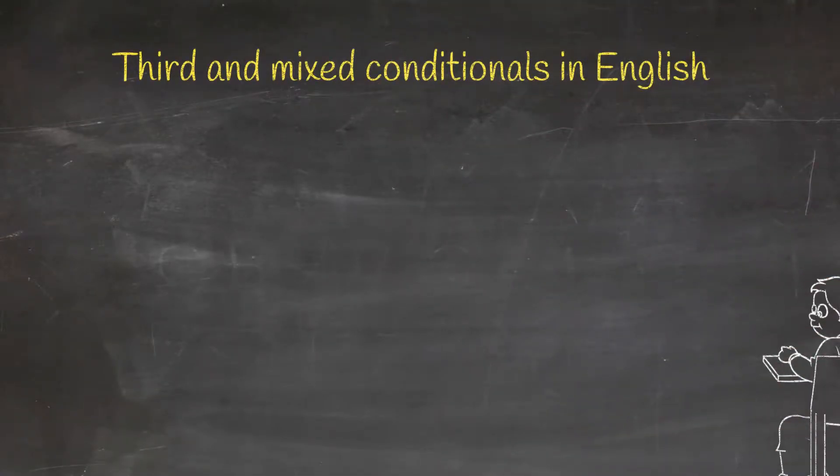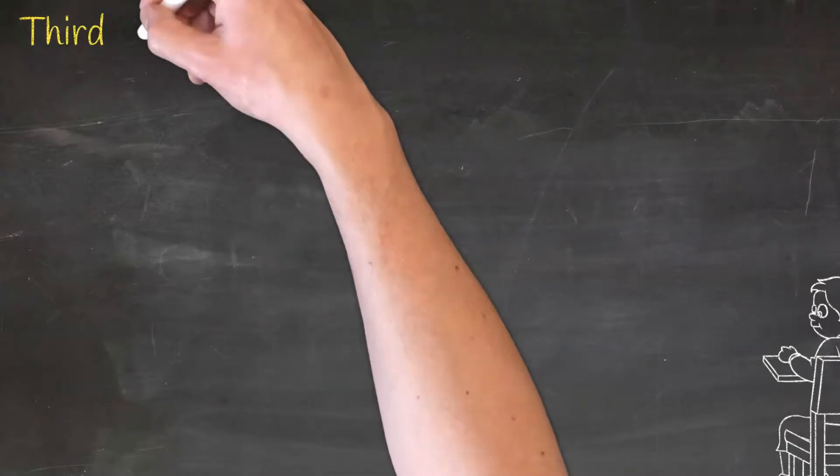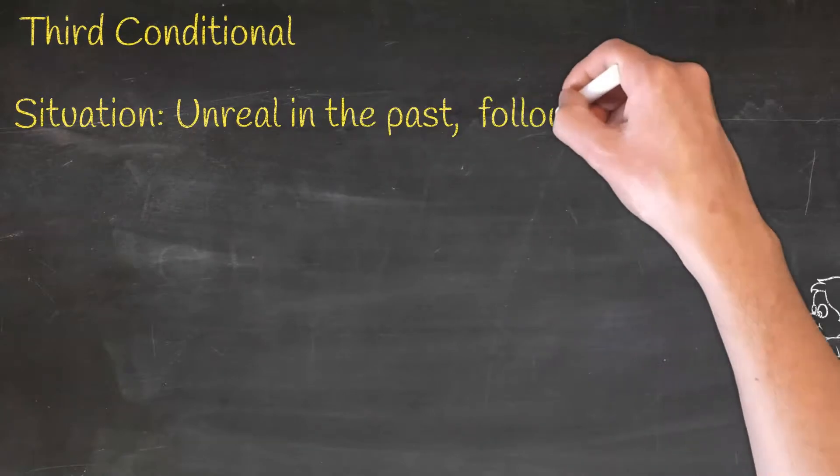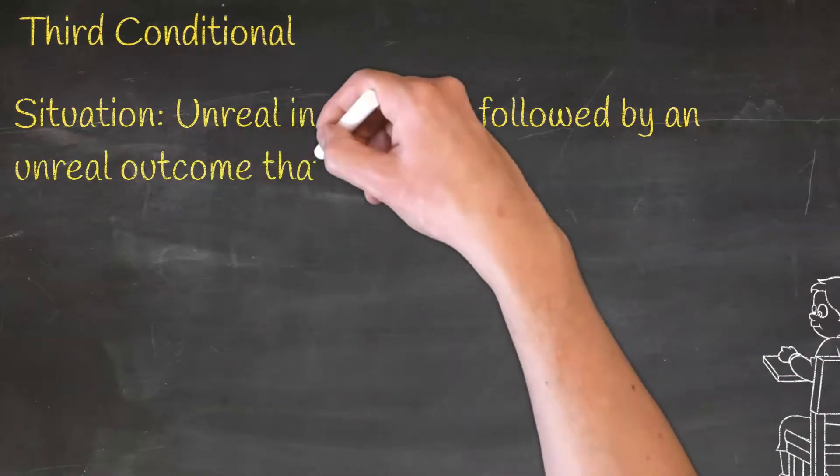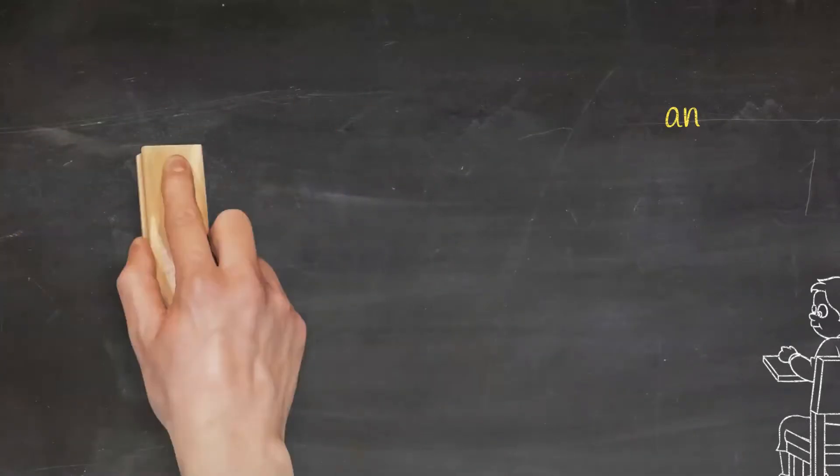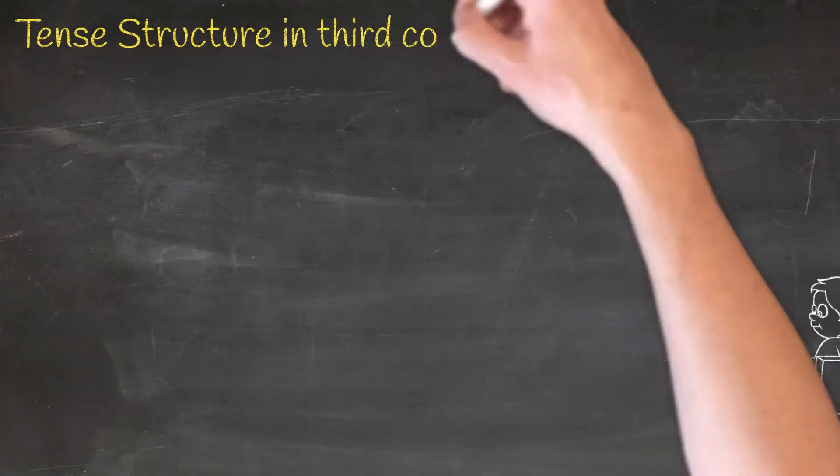We use third conditionals to express completely unreal situations in the past followed by a hypothetical outcome that did not occur. The formation of third conditionals is also simple.